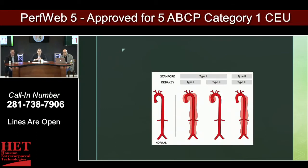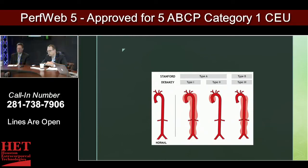This is a review slide showing the types of dissections. I typically describe them as type A and type B. You can also get DeBakey type one and type two — the type one and two begin in the ascending, type two is the ascending alone, type one involves the arch and abdominal, and a type three would be distal to the left subclavian.